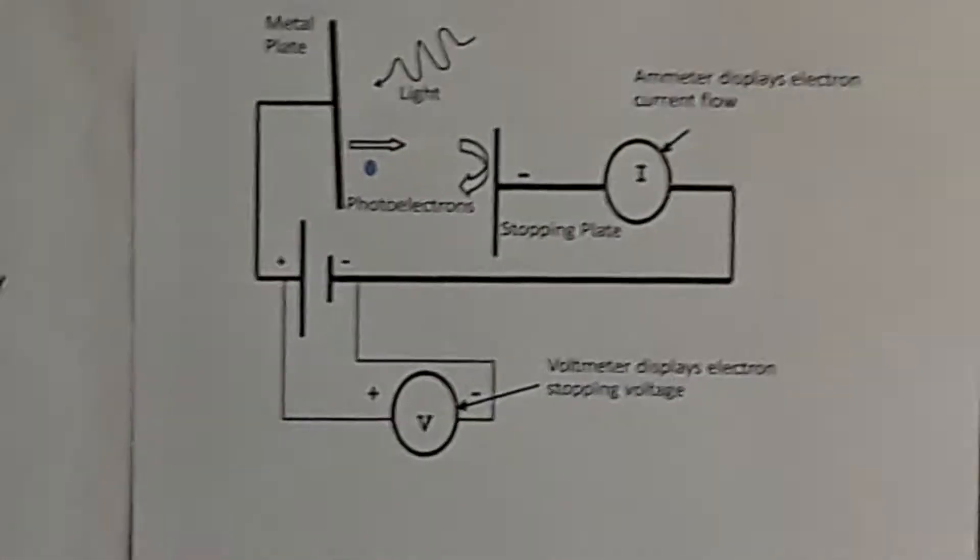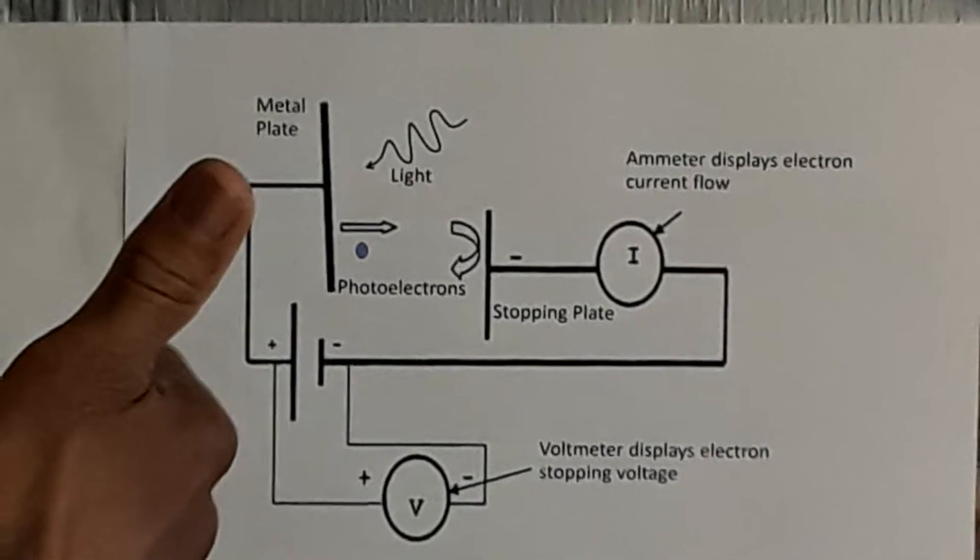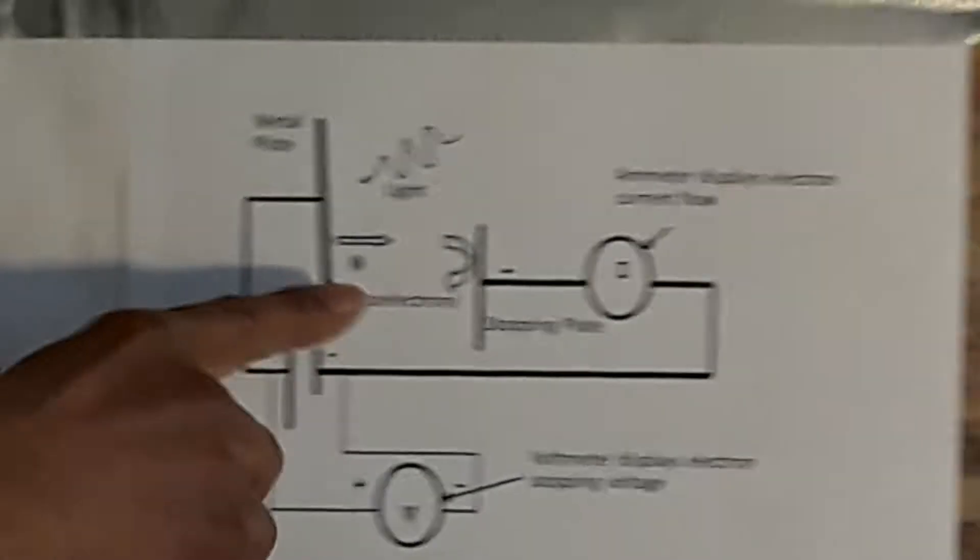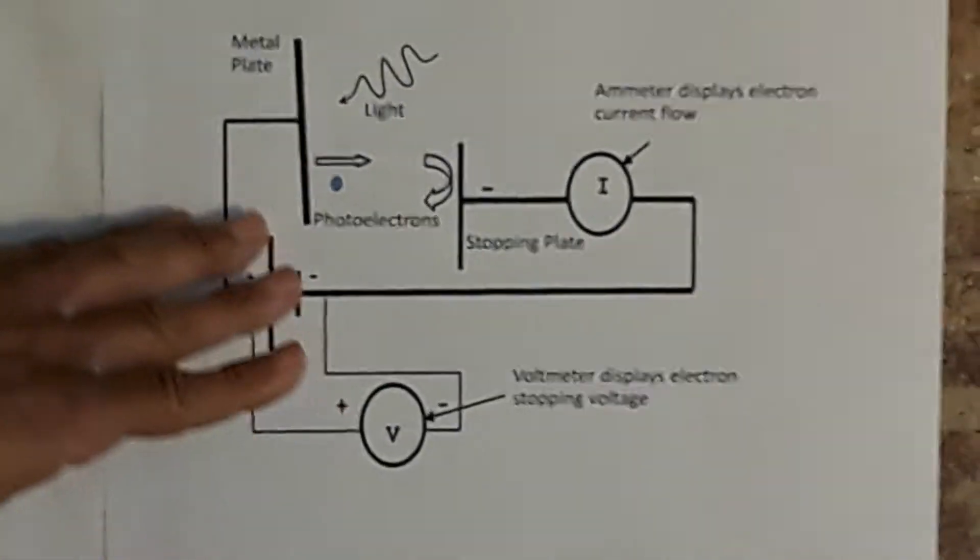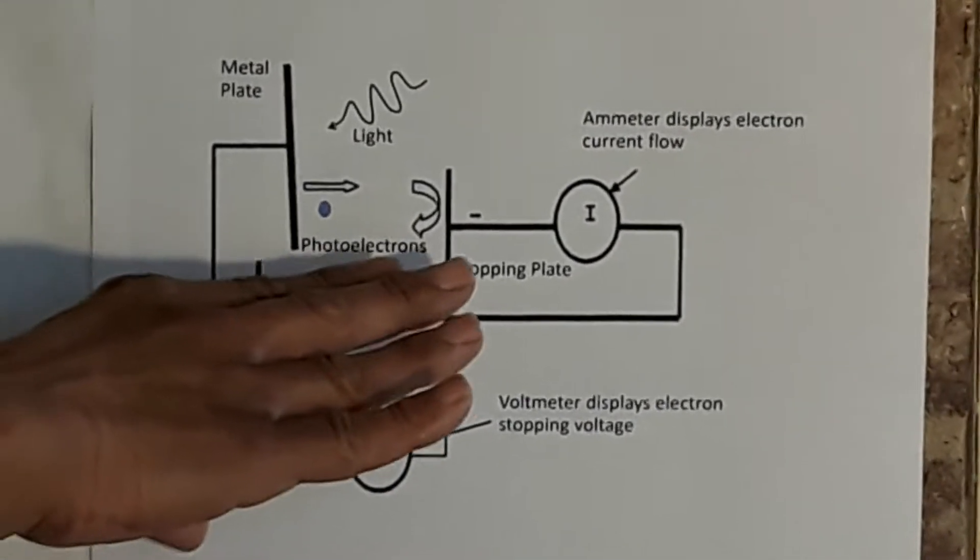And if enough of those are going off and they go off in the same direction, you have current flow. So here's a light source here in the metal plate, you have current flowing. These are the photoelectrons giving us current flow.